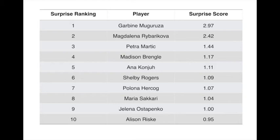Third spot goes to Petra Martic, who seemed to come out of nowhere this year, reaching the round of 16 with a big win over Daria Gavrilova in the first round. Fourth spot goes to Madison Brengle, who ended Petra Kvitova's run this year. Kvitova was many people's favorite to take the title, and many of us wanted her in the event longer — but credit to Brengle for getting that big win and earning the fourth spot in our rankings.